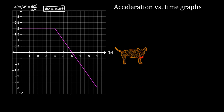Let's consider the first four seconds. Between zero and four seconds, Daisy had an acceleration of two meters per second squared. So delta V equals two meters per second squared times four seconds — the second units cancel — giving us positive eight meters per second. So the change in velocity for the first four seconds was positive eight meters per second.